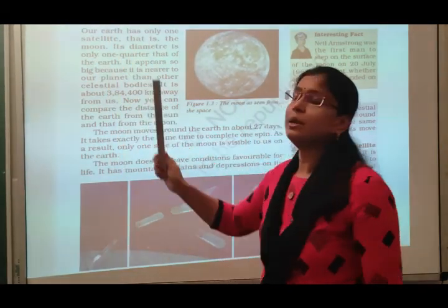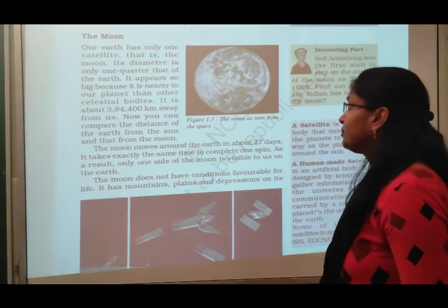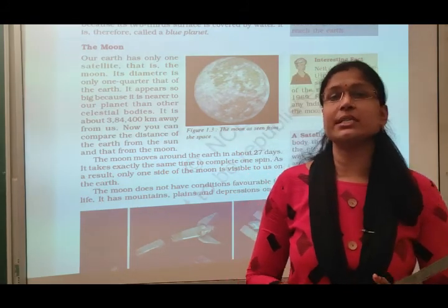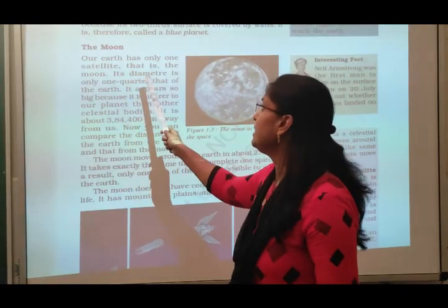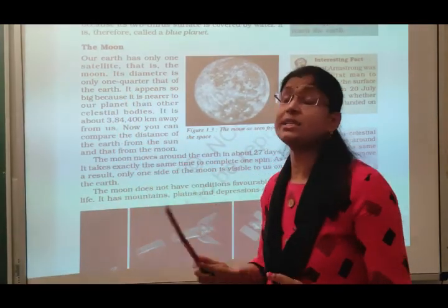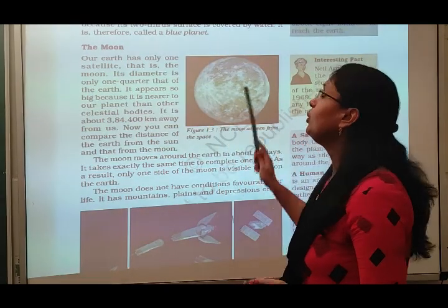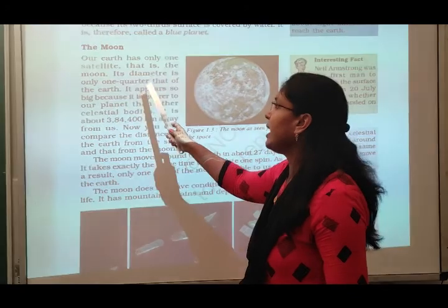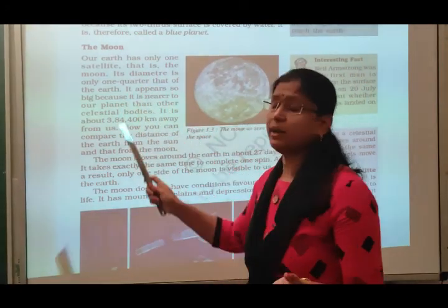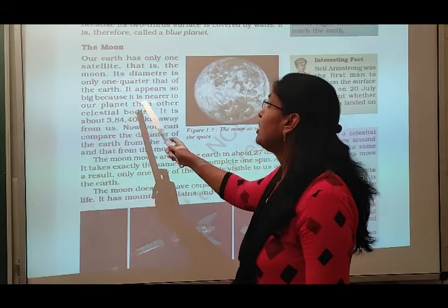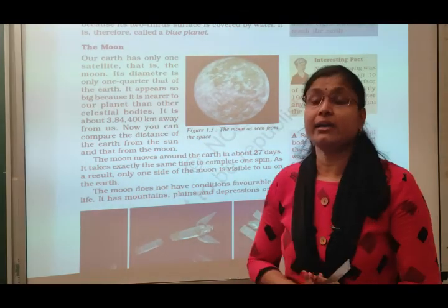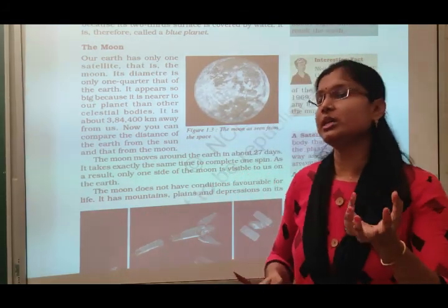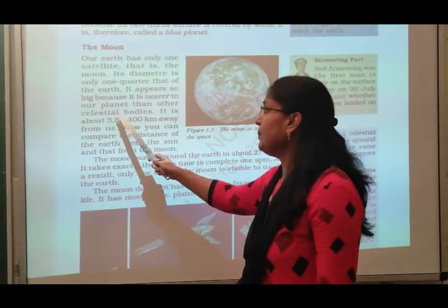Next paragraph is about the moon. Our earth has only one satellite — that is the moon. Its diameter is only one quarter that of the earth. Diameter means the distance between the two poles — from north pole to south pole. The moon appears big to us because it is nearer to our planet than other celestial bodies.